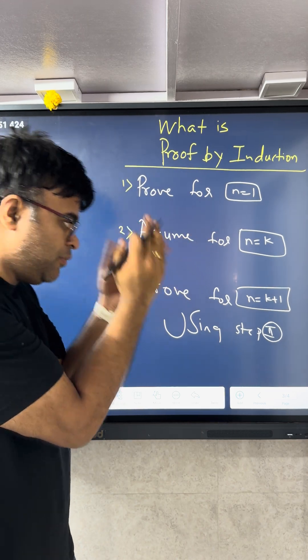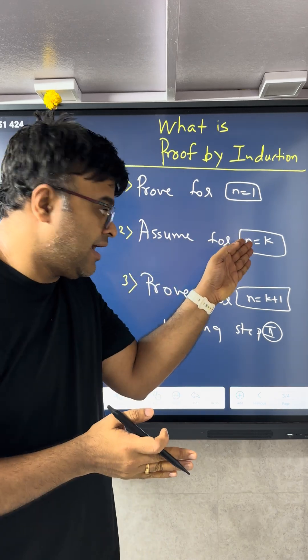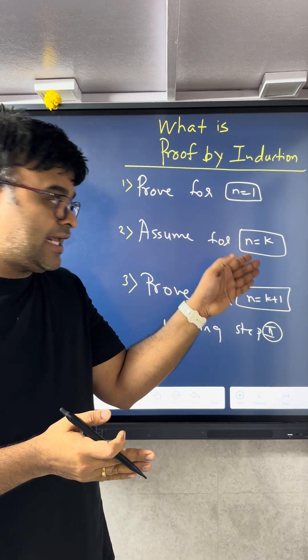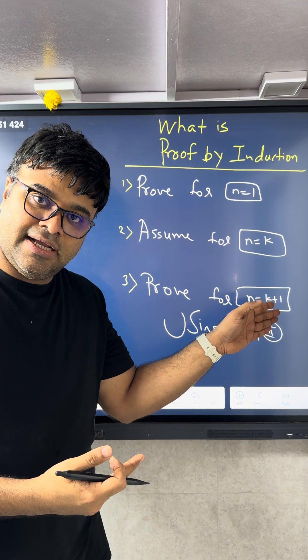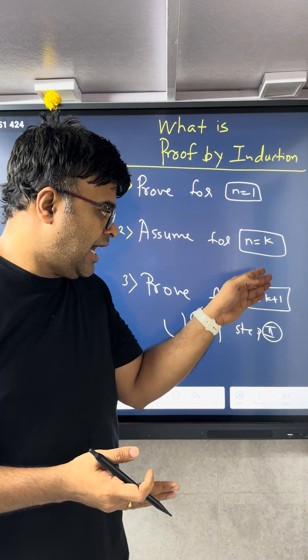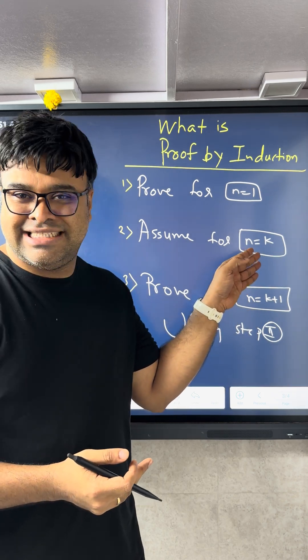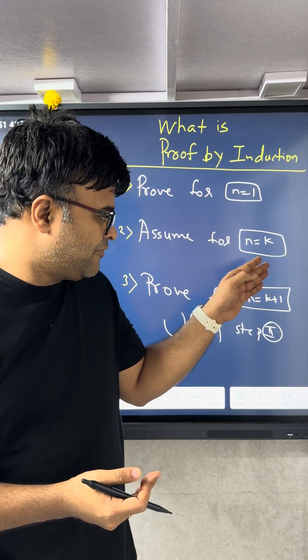You say that I can prove it for every k and k plus 1 is the next number. So if I assume for 55, I can prove it for 56. If I can assume for 67, I can prove it for 68.